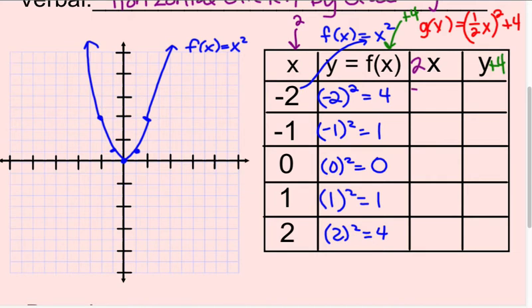So negative 2 times 2 equals negative 4. Negative 1 times 2 is negative 2. 0 times 2 is 0. 1 times 2 is 2. 2 times 2 is 4. So we've taken care of the x.